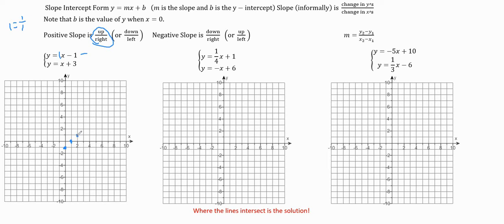Then we're going to make a straight line that goes through all the points. There will be some human error since I'm graphing this freehand.